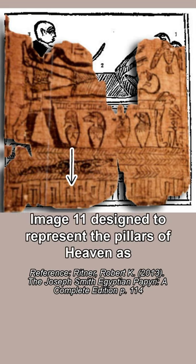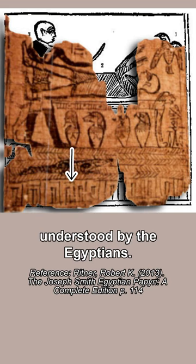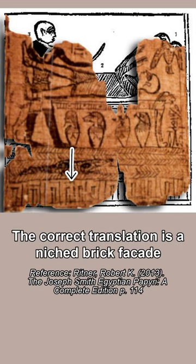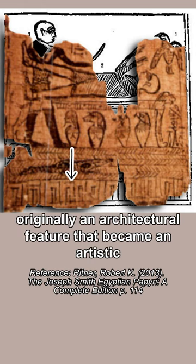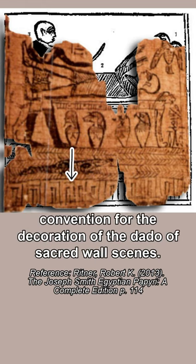Image 11: Smith's translation is 'designed to represent the pillars of heaven, as understood by the Egyptians.' The correct translation is a nist brick façade, originally an architectural feature that became an artistic convention for the decoration of the dado of sacred wall scenes.